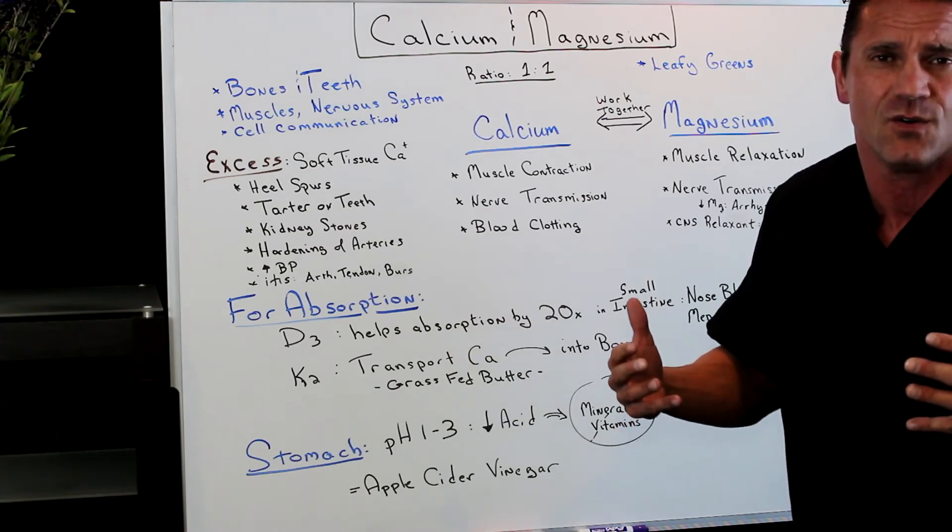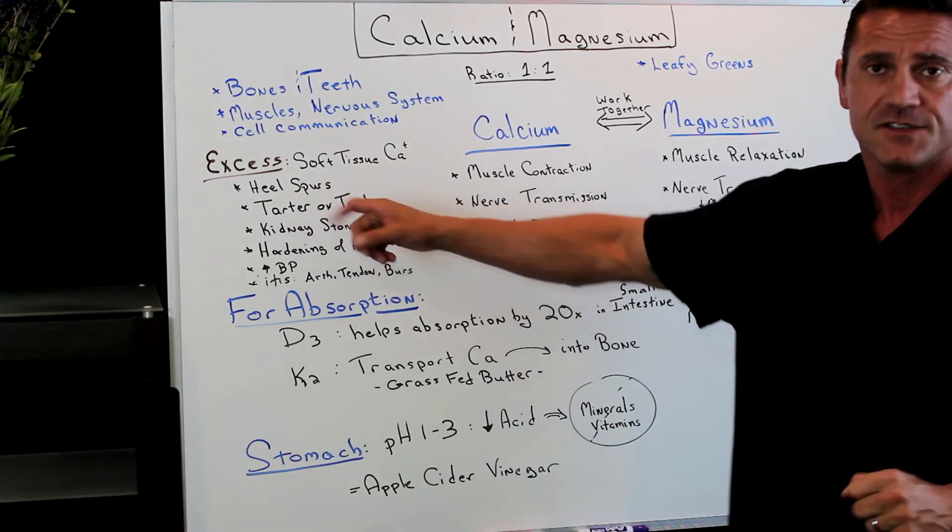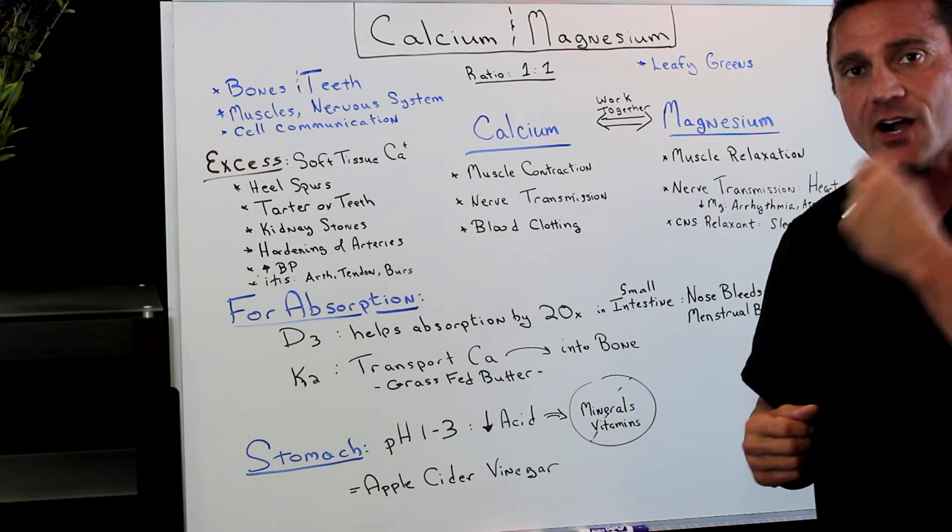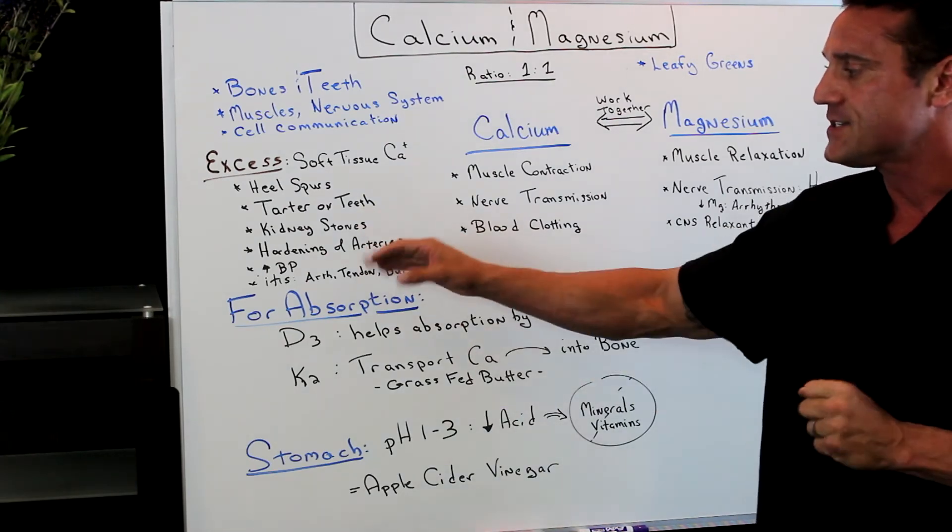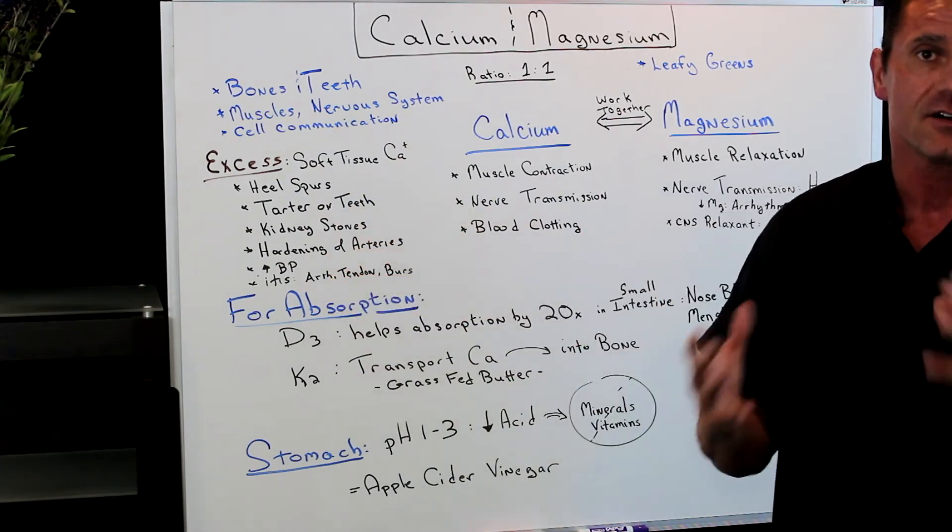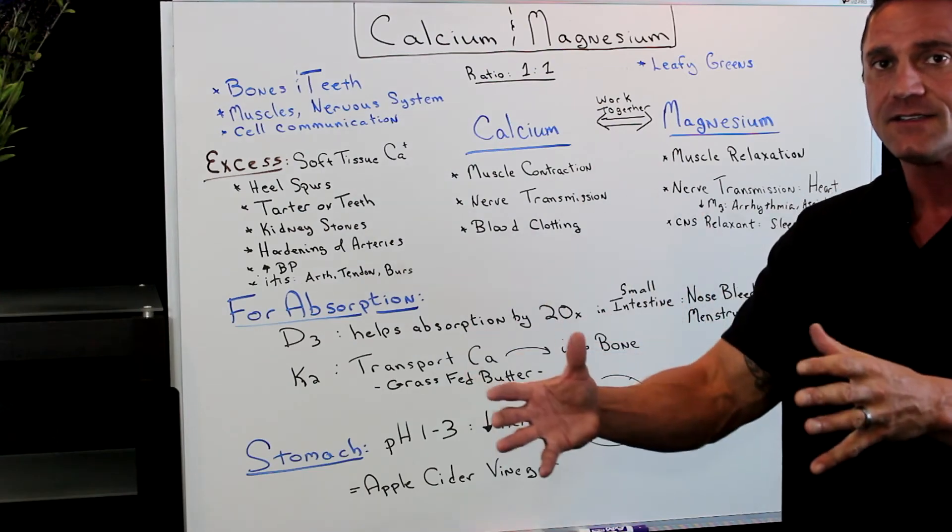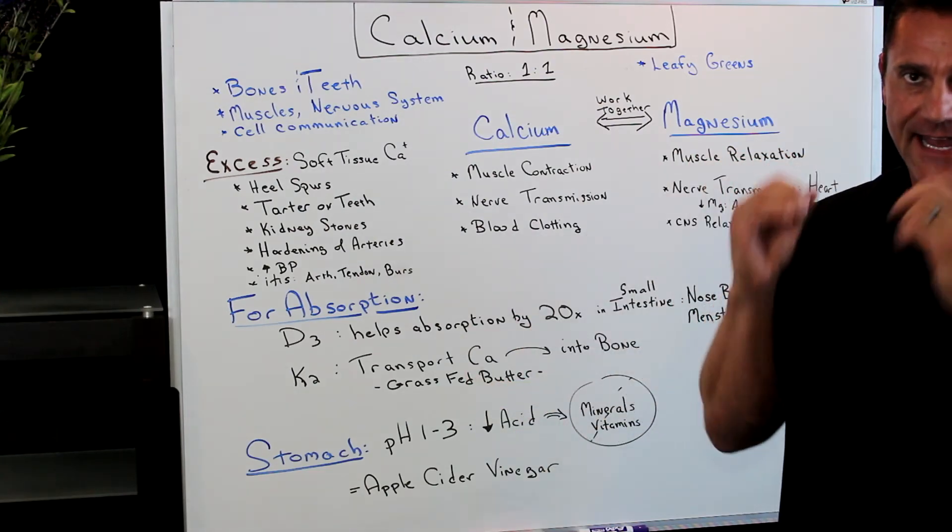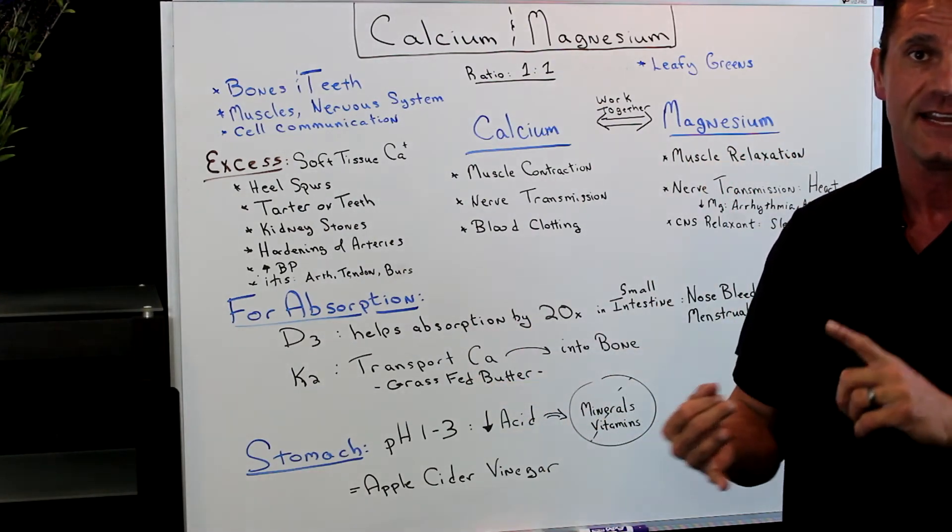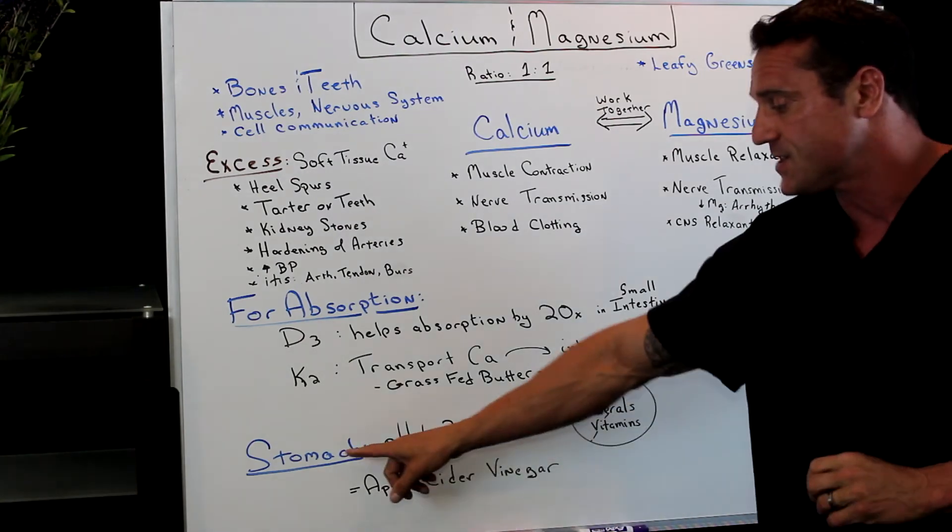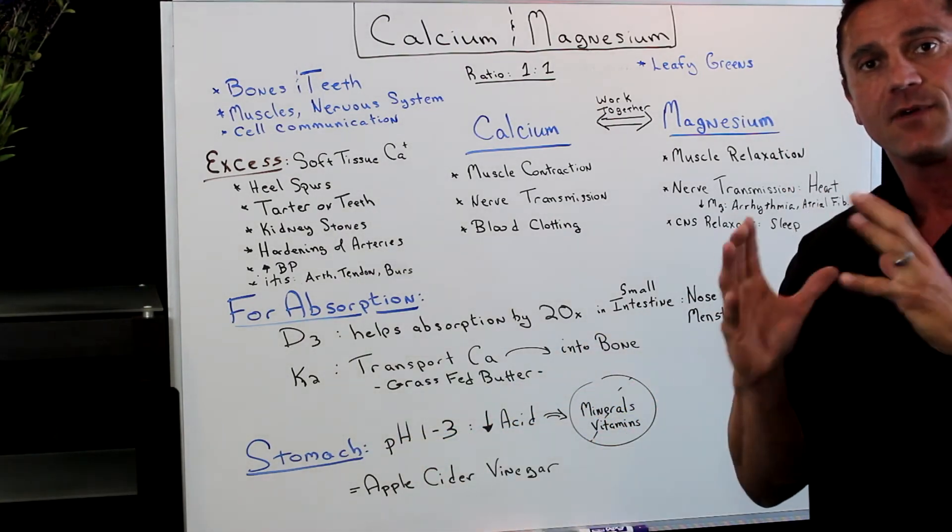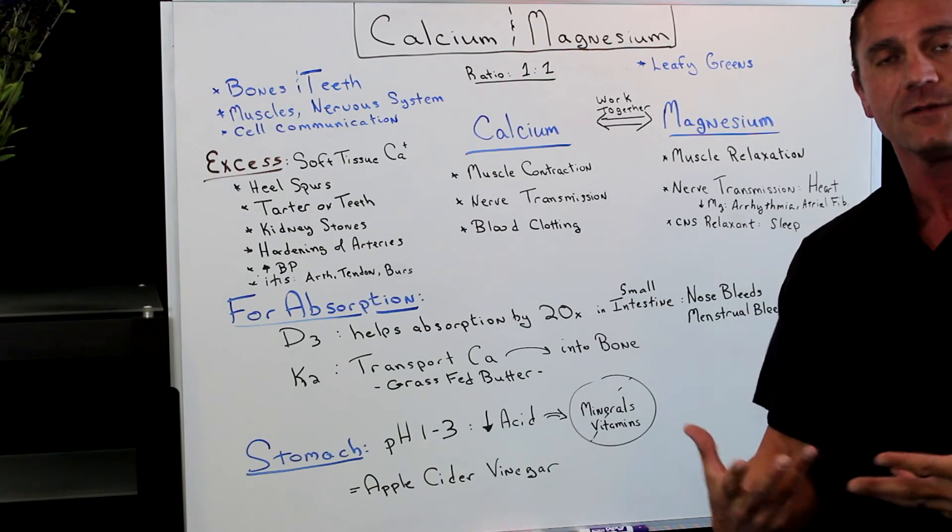We all know these people, their muscles are just so hard. They're complaining of heel spurs, excess tartar on the teeth, tartar is calcium. They have kidney stones, high blood pressure, hardening of the arteries. It's not a calcium thing. It's a lack of absorption of vitamin D3 and K2. Why? Because their stomach pH is not low enough to break down the food's constituents for absorption.